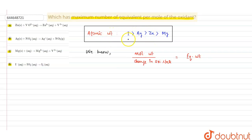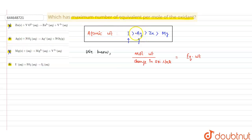Since iodine has the maximum molecular weight, we can eliminate zinc and magnesium. Now comparing AgNO₃ giving Ag⁺ and NO₂⁻ versus iodine — iodine's molecular weight is much greater than silver's, with three or four atomic numbers difference between I and Ag. So we eliminate the silver option as well.